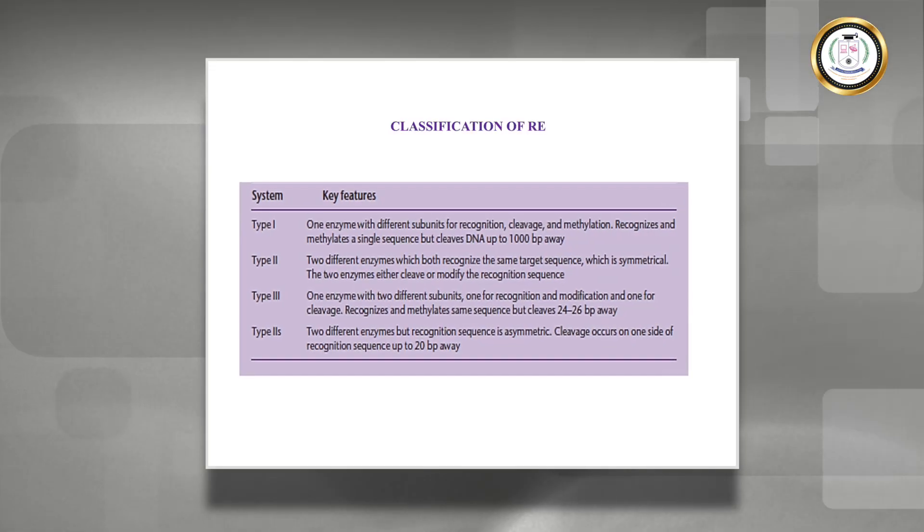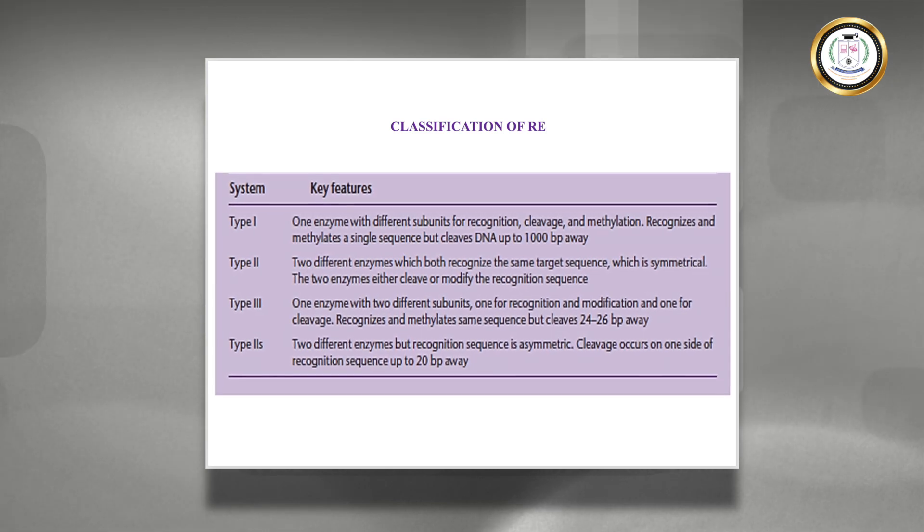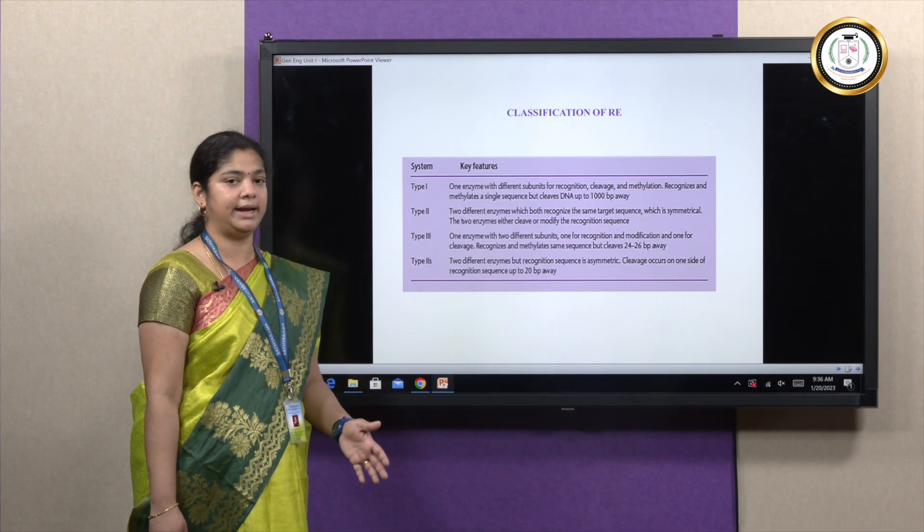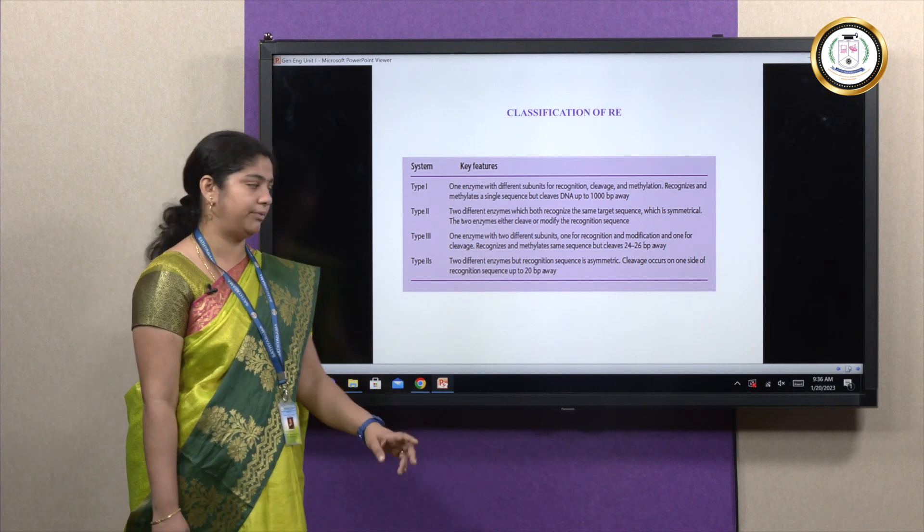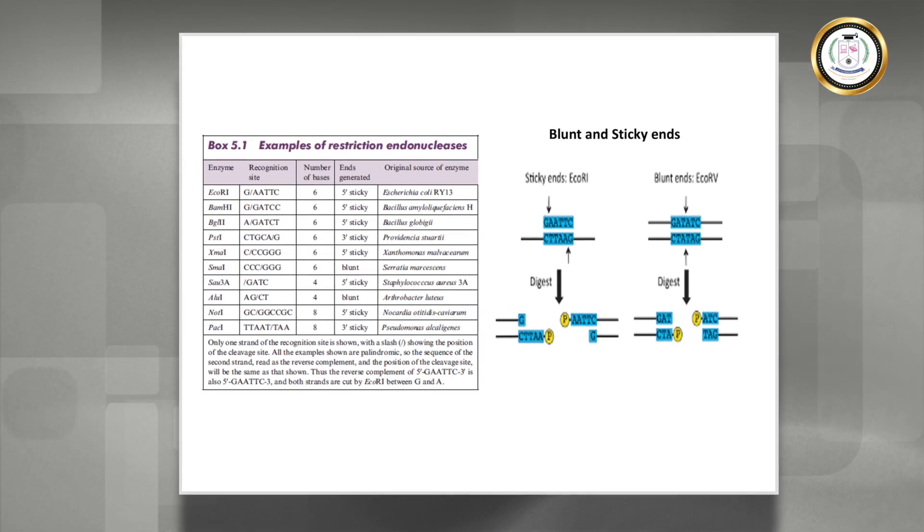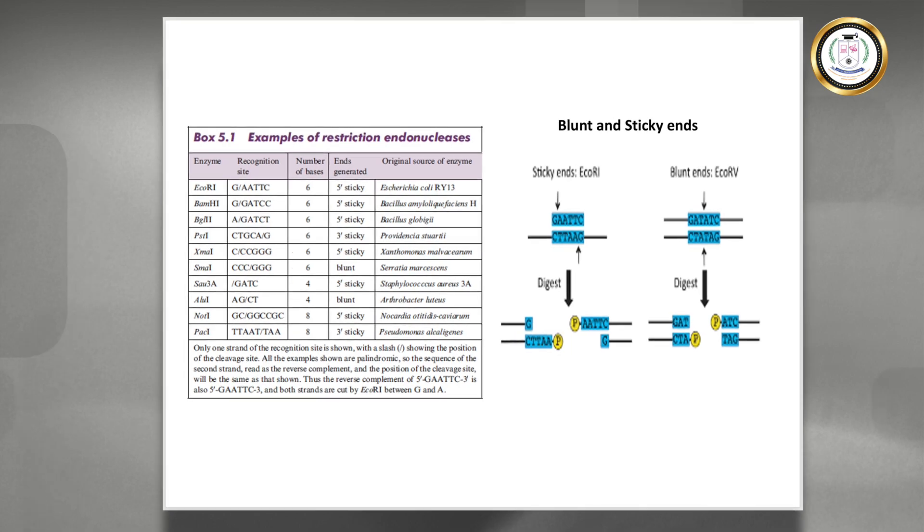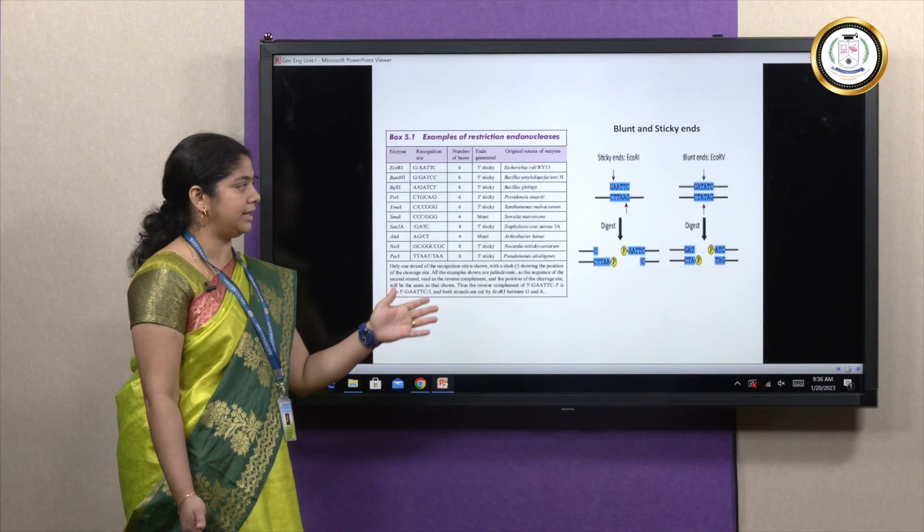One major common thing about these enzymes is they are basically endonucleases which cut inside a DNA segment, while type 2 exactly cuts the particular base pair where we need it. Some examples of restriction enzymes include EcoR1, BamH1, Pst1, in which we have both types—blunt and sticky ends.